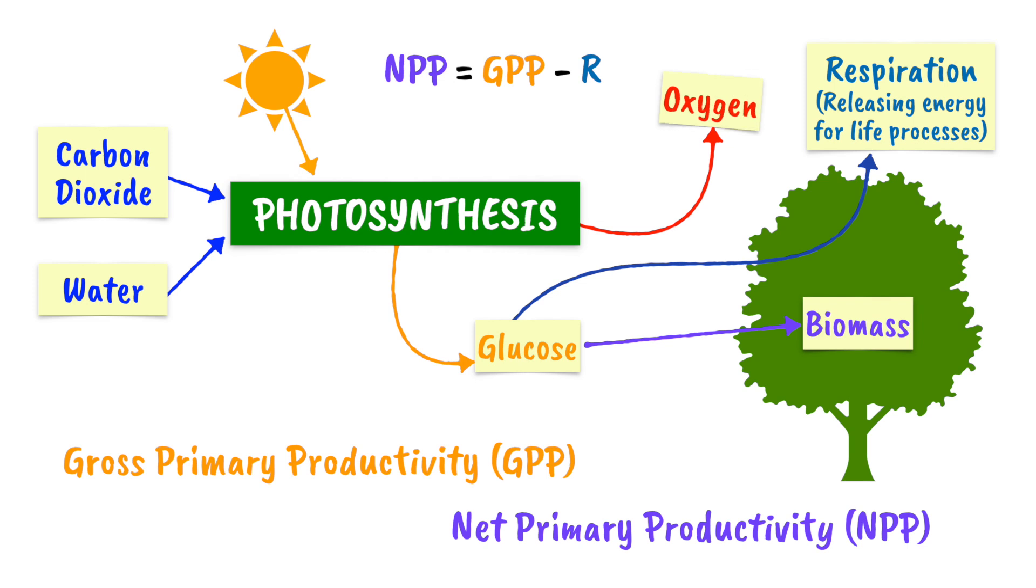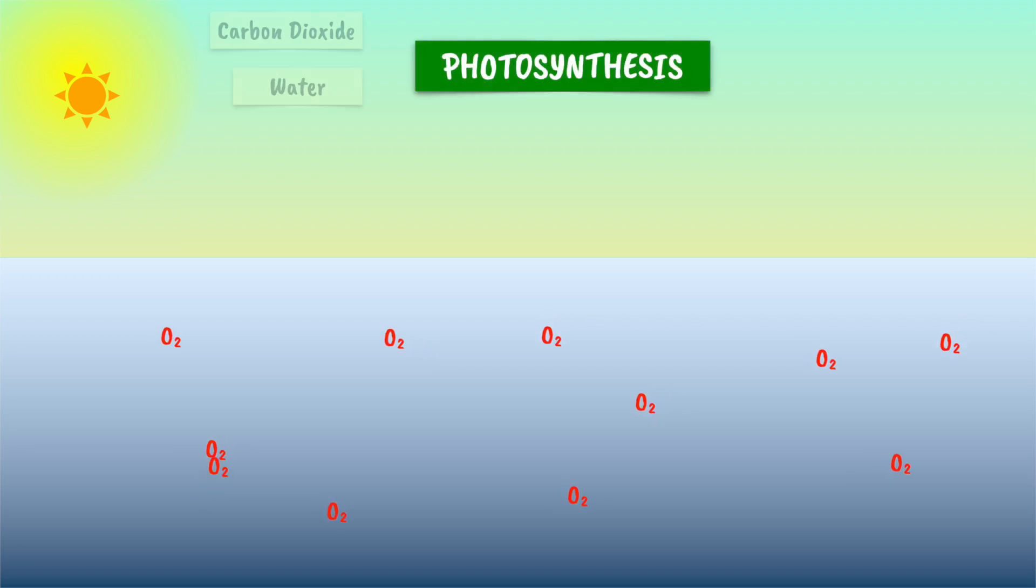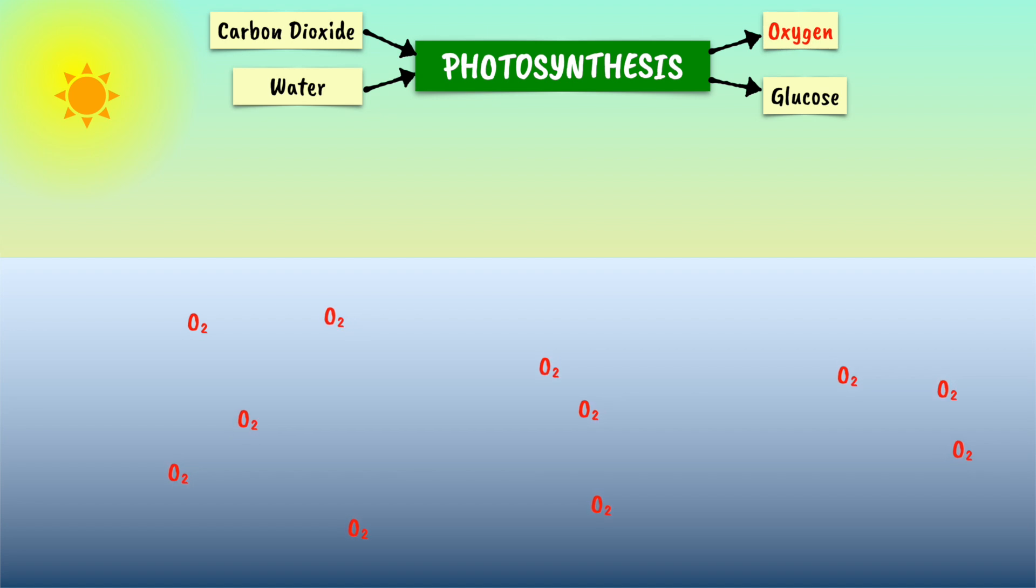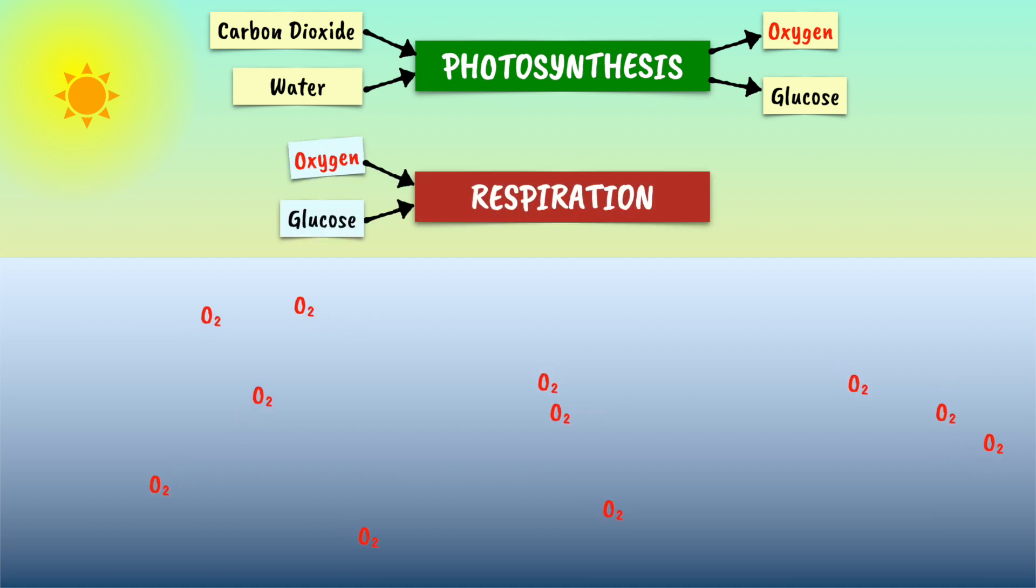Notice also that oxygen is produced in proportion to glucose production in photosynthesis. The light and dark bottle method involves measuring changes in dissolved oxygen levels. Oxygen is a product of photosynthesis but also a reactant in respiration.